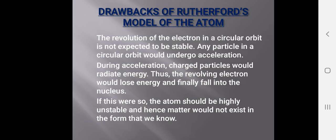Some drawbacks of Rutherford's model: the revolution of an electron in a circular orbit is not considered stable. Any particle in a circular orbit would undergo acceleration, and during acceleration, charged particles would radiate energy. Thus the revolving electron would lose energy and finally fall into the nucleus. If this were so, the atom would be highly unstable and matter would not exist in its original form. That is why his model failed.